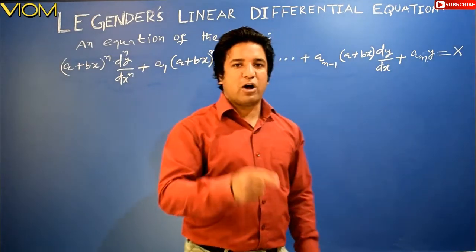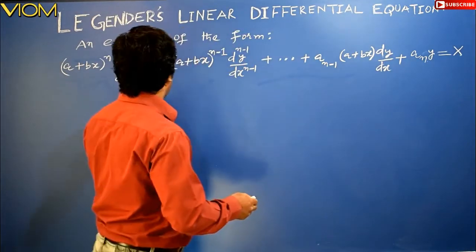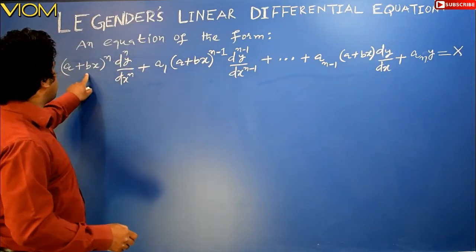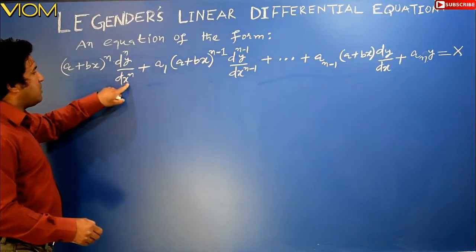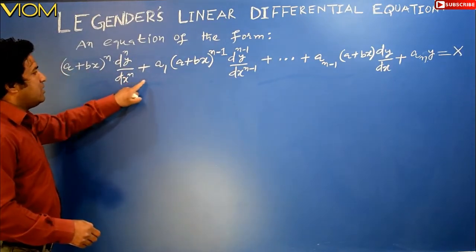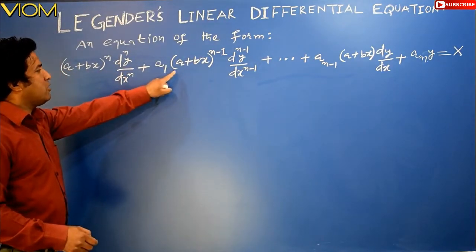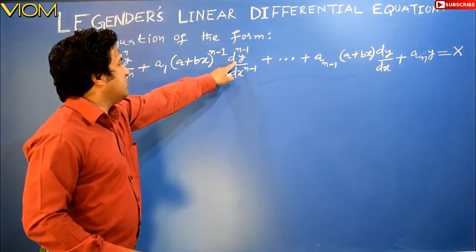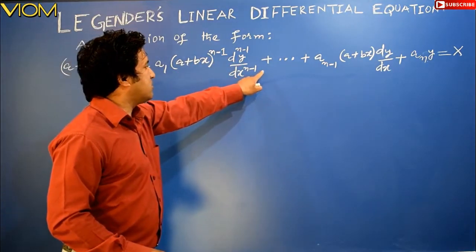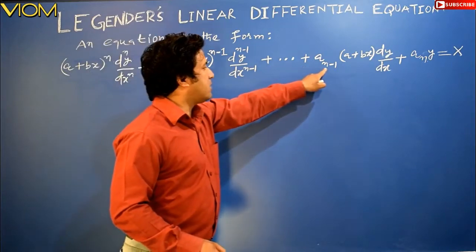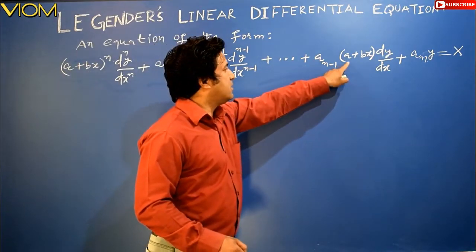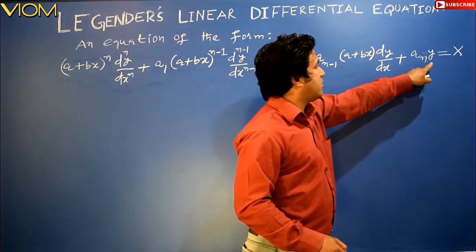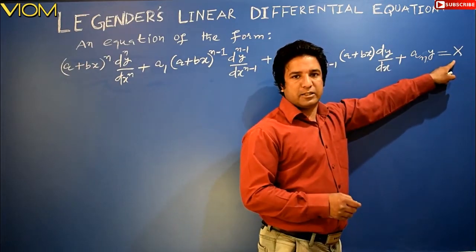We will first of all take an equation of the form: (a + bx)^n · (d^n y / dx^n) + a₁(a + bx)^(n−1) · (d^(n−1)y / dx^(n−1)) + ... + a_(n−1)(a + bx) · (dy/dx) + aₙy = X.